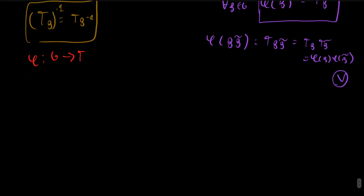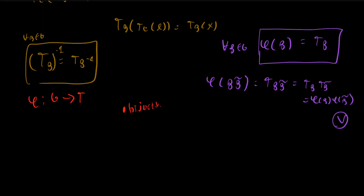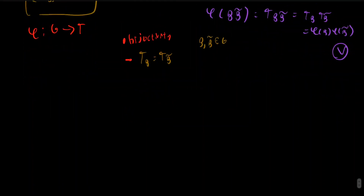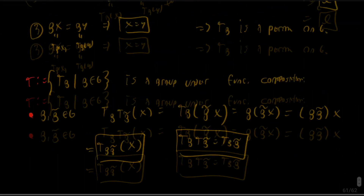For bijectivity: surjectivity is clear from the construction. For injectivity, suppose T_g = T_{g̃}. Since the functions are equal, T_g(e) = T_{g̃}(e), which means g·e = g̃·e, hence g = g̃. So φ is injective, making it a bijection. Therefore the group {T_g} is isomorphic to G, and every group is isomorphic to a group of permutations.